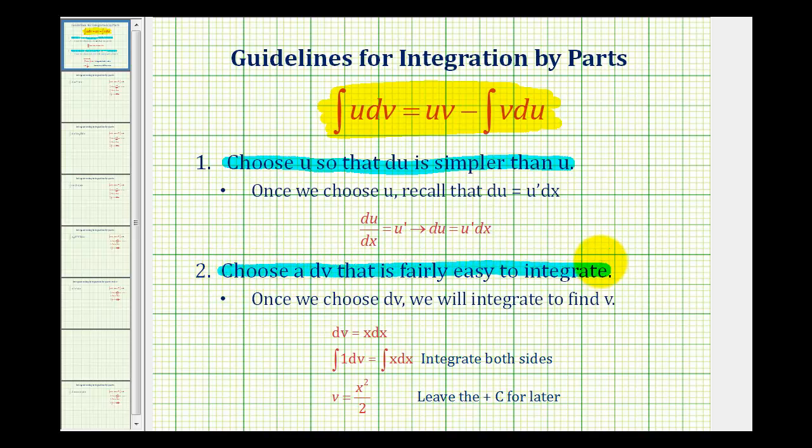And again, the whole idea here is that the integral of v du should be easier to integrate than the integral of u dv. If it's not, we probably selected the wrong u and the wrong dv. So let's go back and take a look at our example.